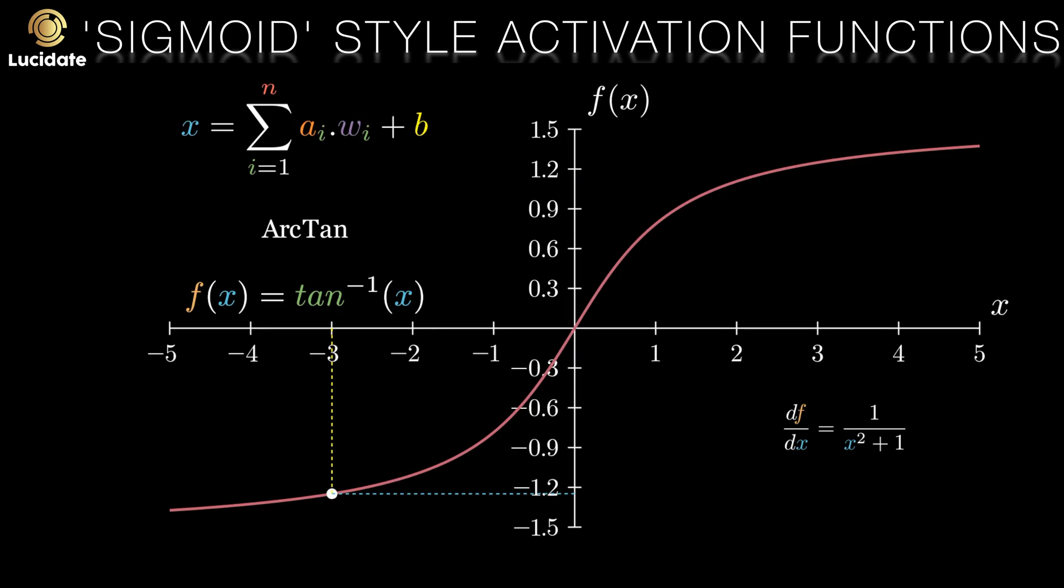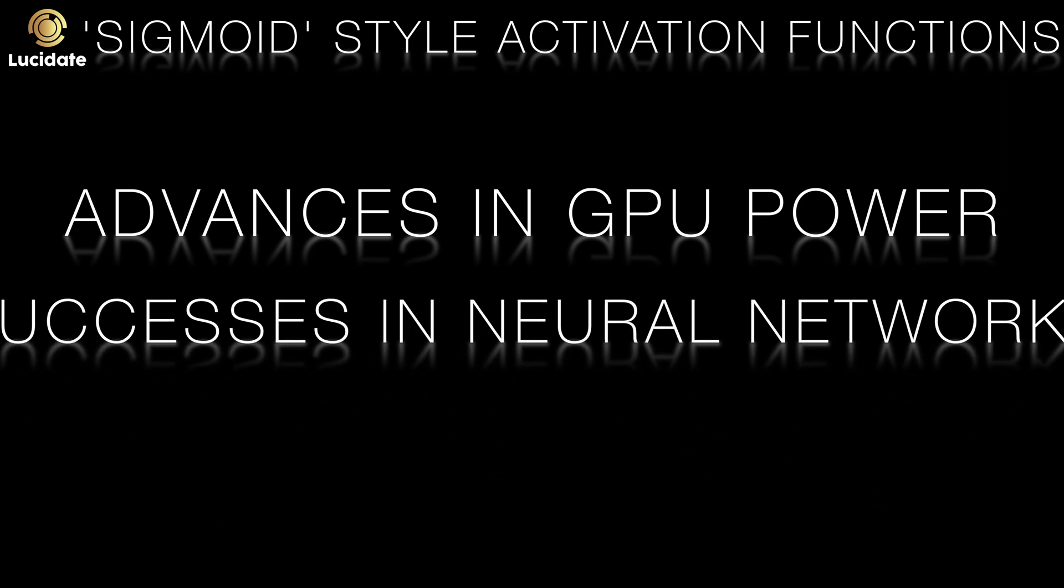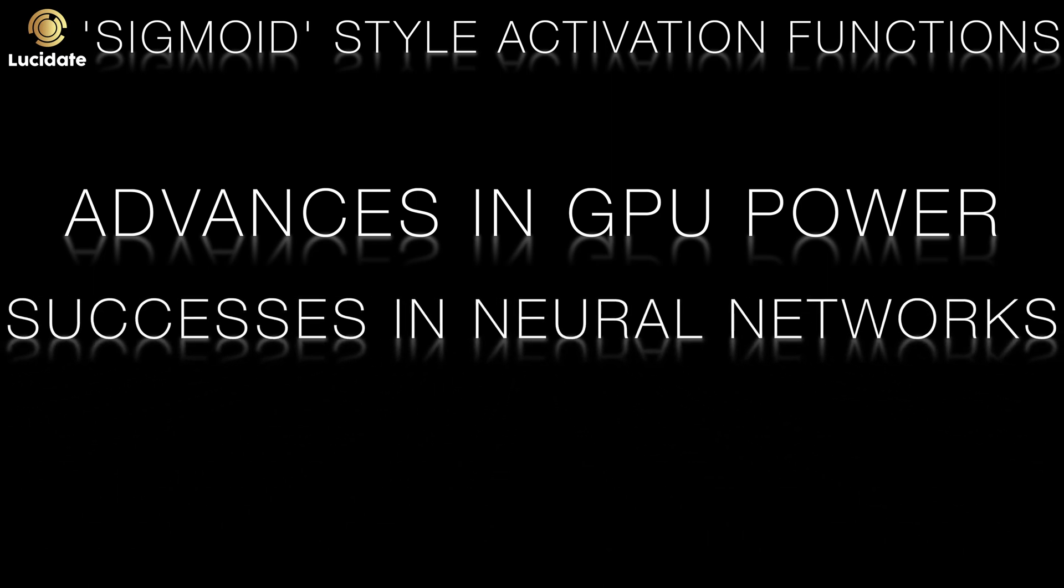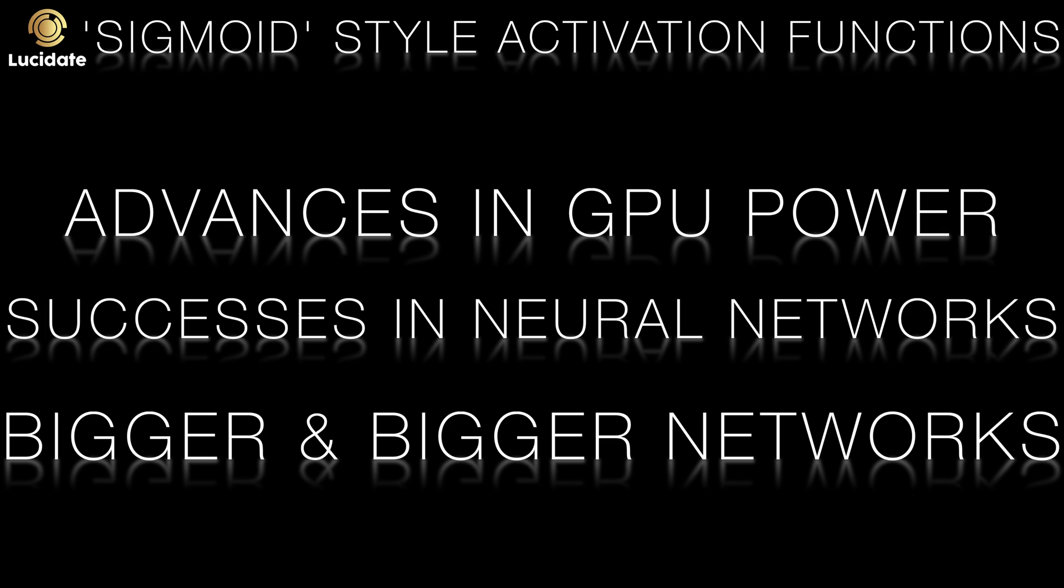As neural networks get bigger, these types of activation functions become more problematic. And with the successes of neural networks as a solution, coupled with advances in computing power and GPUs to allow truly huge neural networks, these types of activation functions are not so common nowadays. But they do have their uses in certain niches, especially in smaller scale systems.